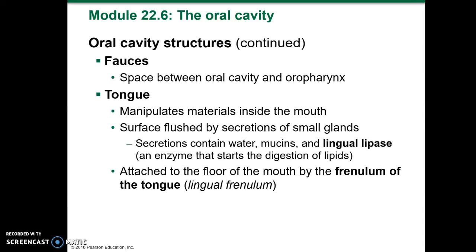The fauces are a space between the oral cavity and the oropharynx. The tongue, of course, manipulates materials inside the mouth. The surface is flushed by secretions of small glands. The secretions contain water, mucins, and lingual lipase, an enzyme that starts the digestion of lipids, attached to the floor of the mouth by the frenulum of the tongue.